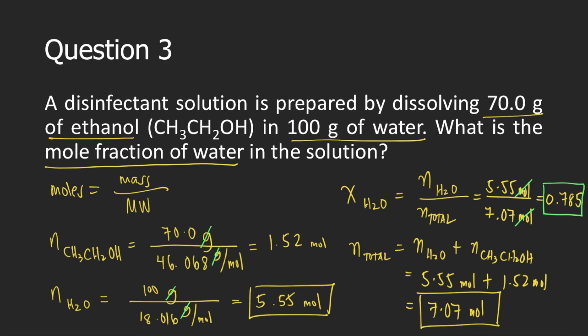If you got a slightly different answer, that might be because we were not using exactly the same molecular weights for ethanol and water. In solving for the molecular weights, I used 12.01 grams per mole for carbon, 1.008 grams per mole for hydrogen, and 16.00 grams per mole for oxygen.